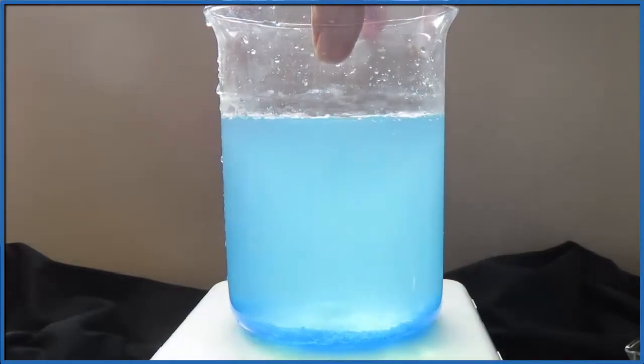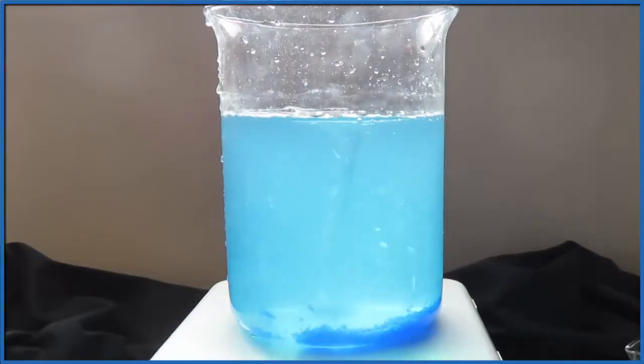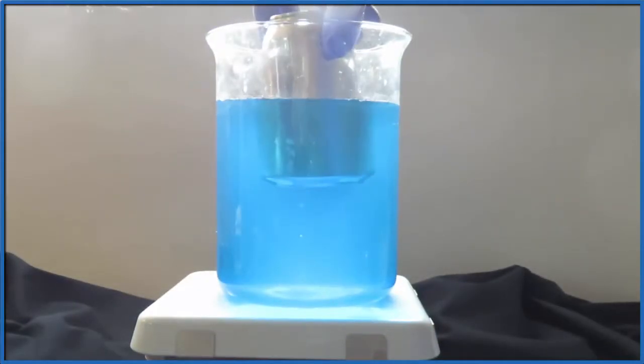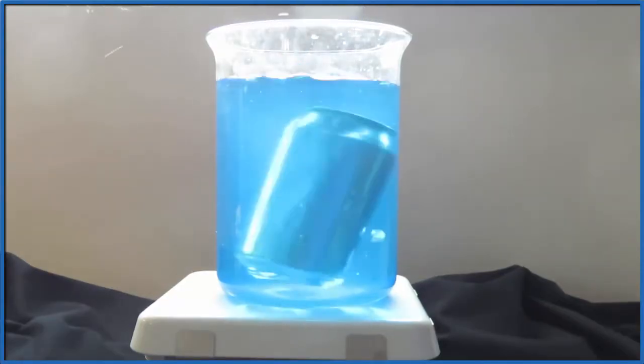Now, when we put the can in, the aluminum should react with that copper-2-ion. So we have our shiny aluminum can. We put it in there with those copper-2-ions and the sulfate ions. And the reaction starts pretty much immediately.